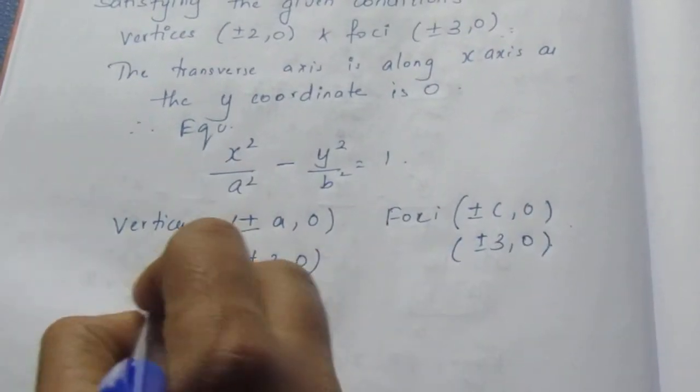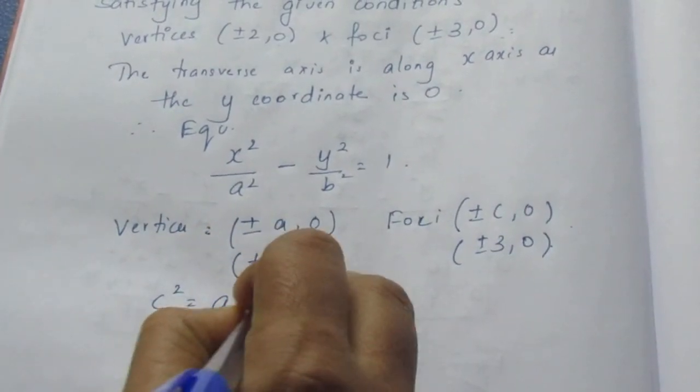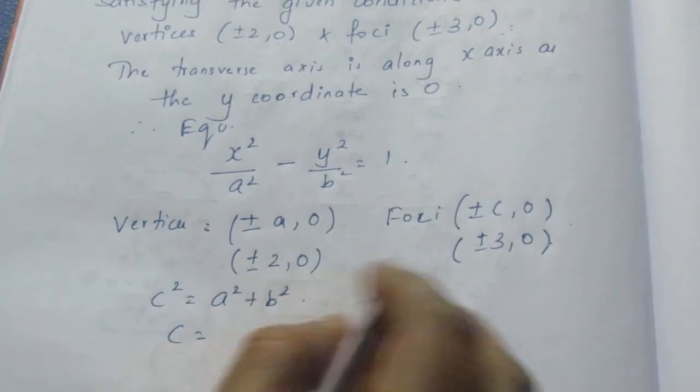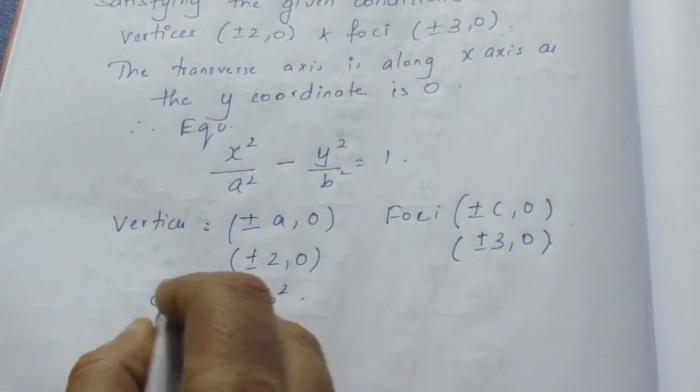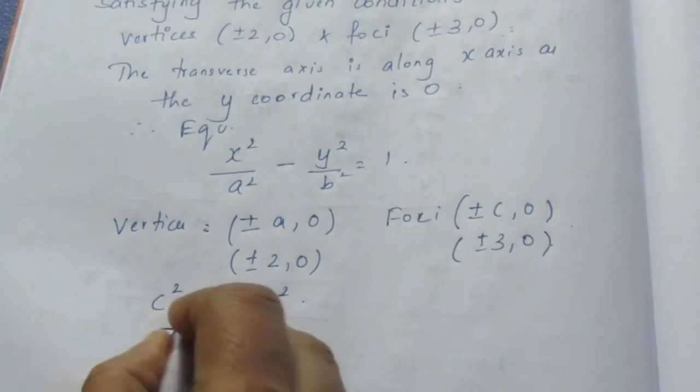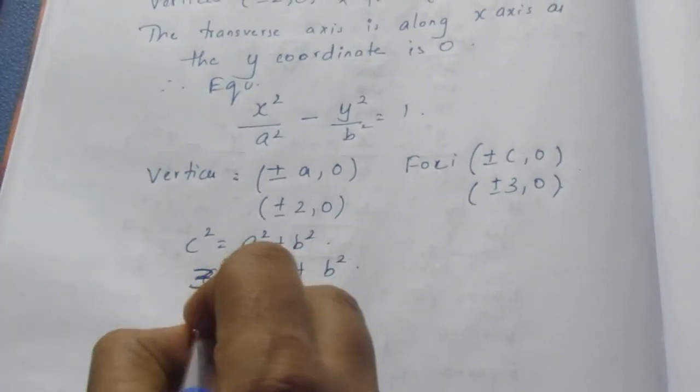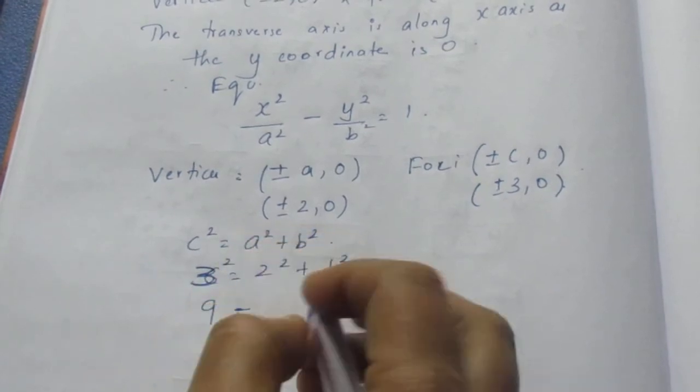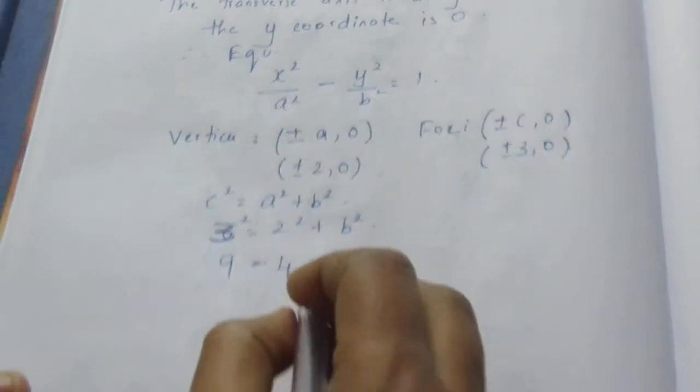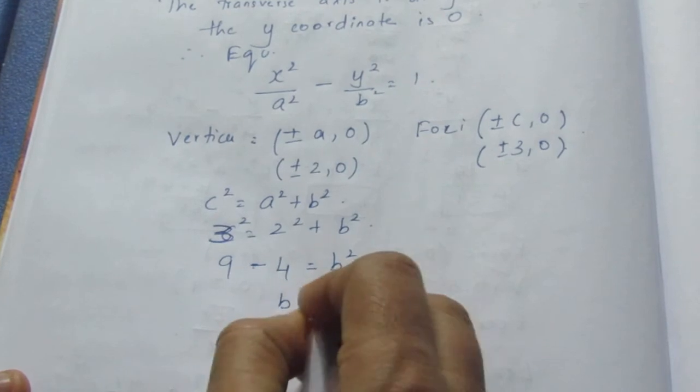We know the c² formula, that is c² = a² + b². Here c is 3, so 3² = 2² + b², which becomes 9 = 4 + b². Bringing 4 to the other side, b² = 5.